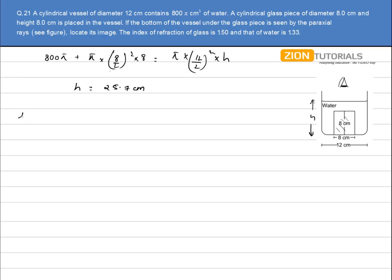The lateral displacement caused by the glass cylinder is given by (1 - 1/μ) × thickness. For the glass cylinder, I can write (1 - 1/μ_glass), that is (1 - 1/1.5) times the thickness of glass, which is 8 cm. This comes out to be 2.26 cm. Now calculating the lateral displacement due to water.